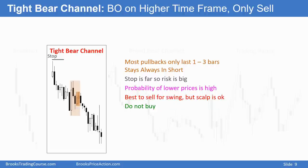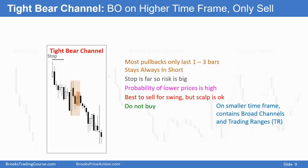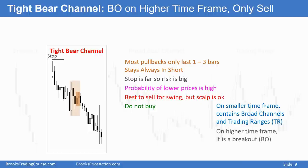And if you go to a small enough timeframe chart, it would even have brief bull trends. On a higher timeframe chart, a tight channel like this is going to be a breakout — and you usually don't have to go to a very high timeframe chart. If this is a five-minute chart, you simply look at a 60-minute chart and it's probably two or three consecutive bear trend bars, which is a breakout.